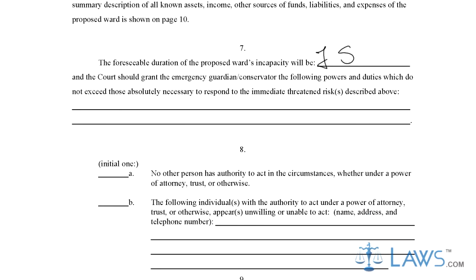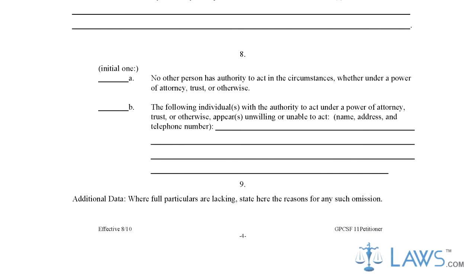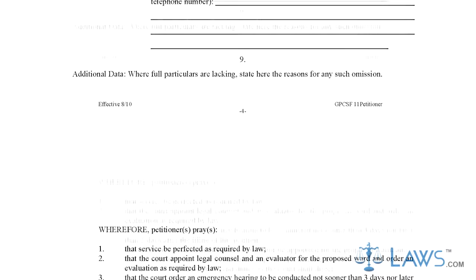Step 7. In Part 8, initial the space indicating whether any other person has a power of attorney, trust, or otherwise. If another person has power, provide their name, address, and contact information.